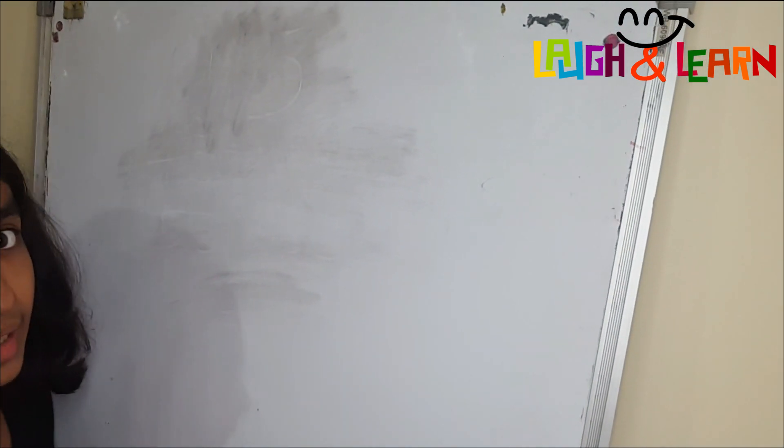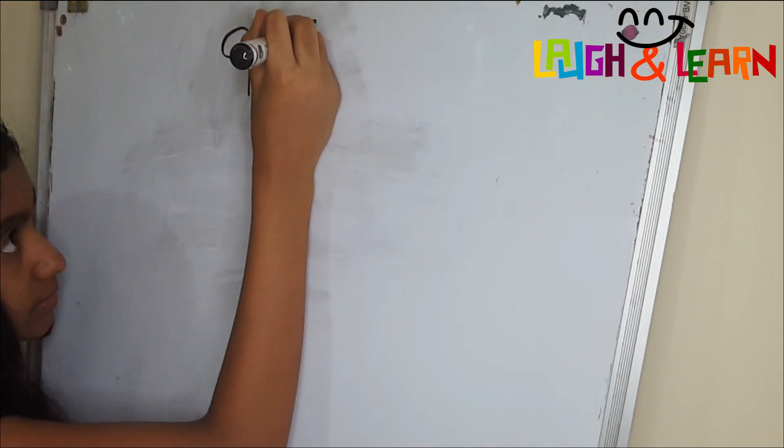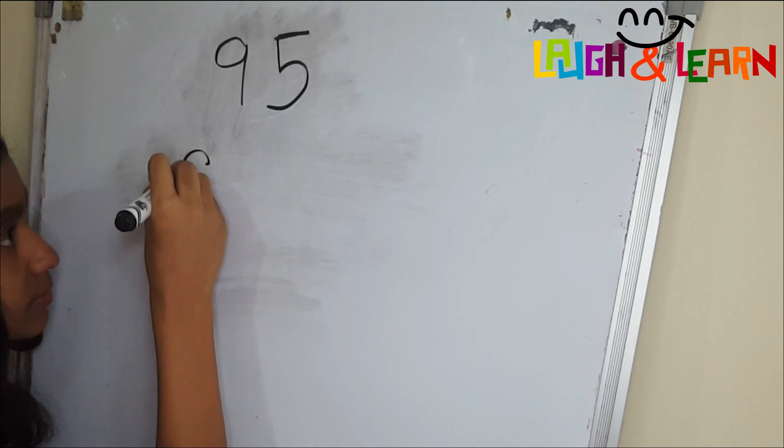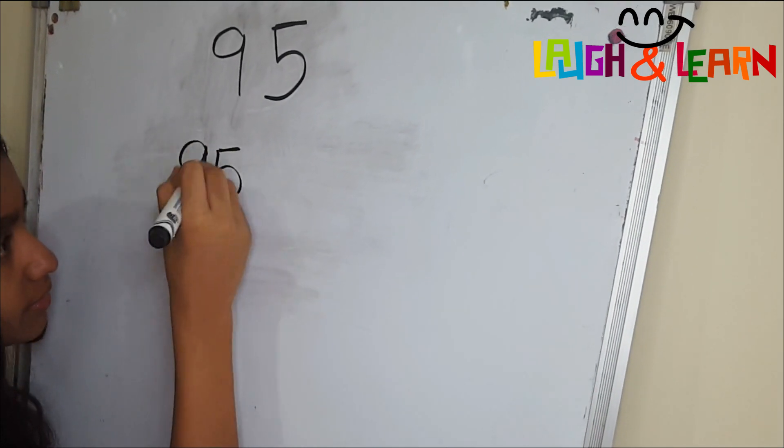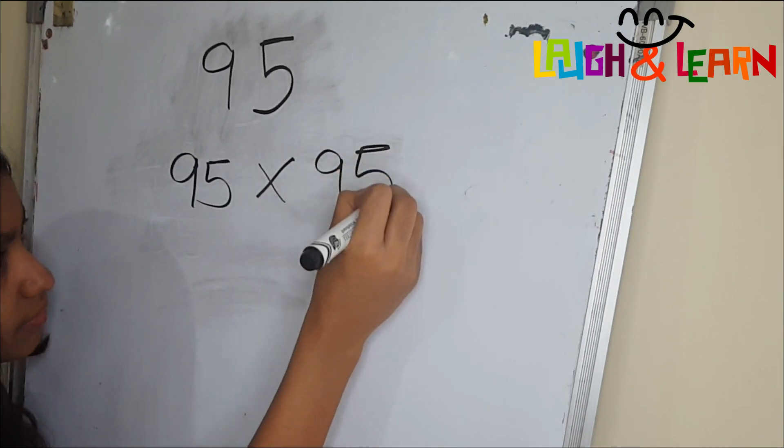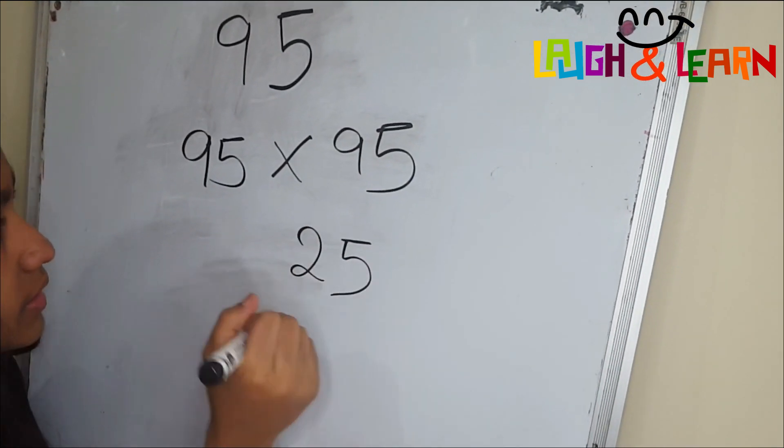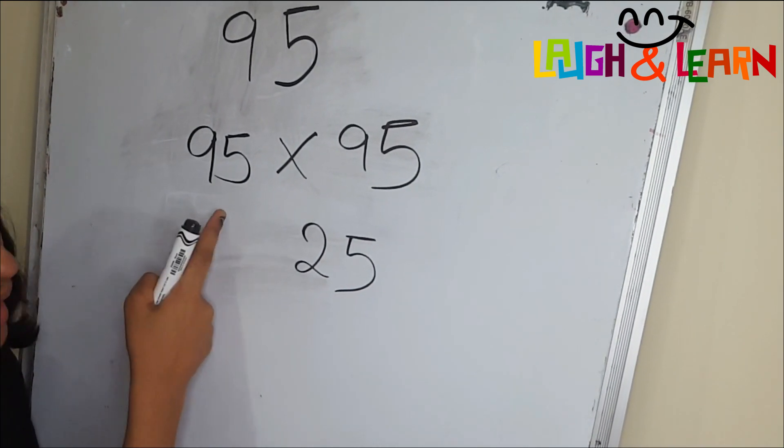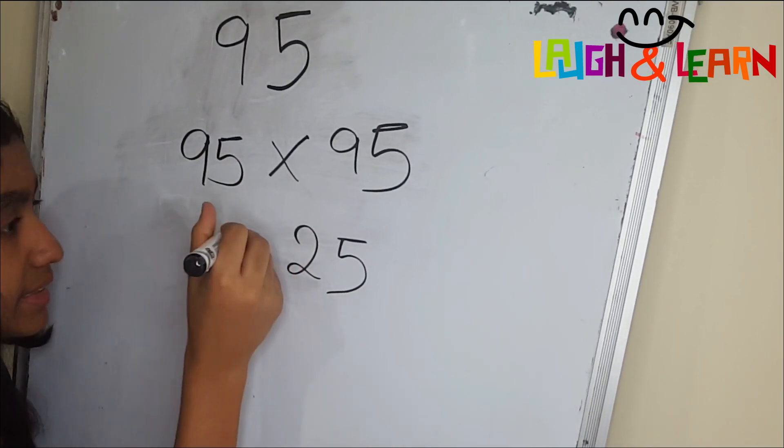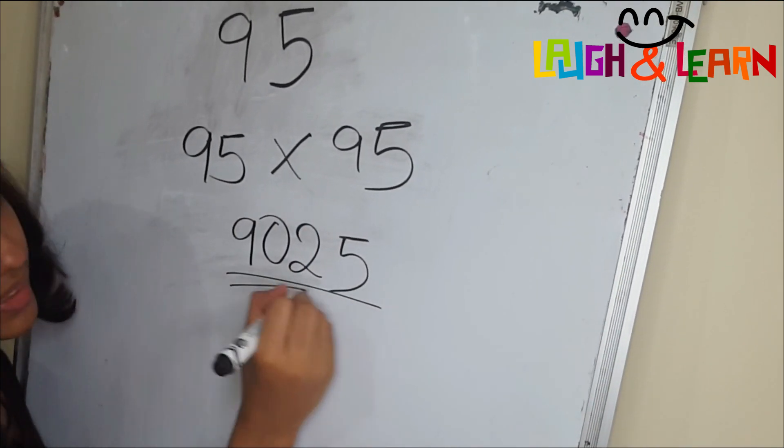So now let's do 95. 95 into 95. So 5 times 5, 25. The number after 9 is 10, so 10 times 9, 90...25. This is the answer.